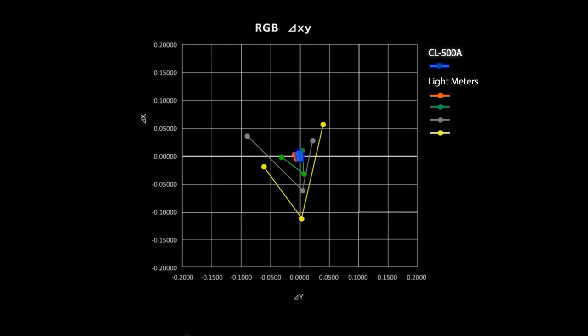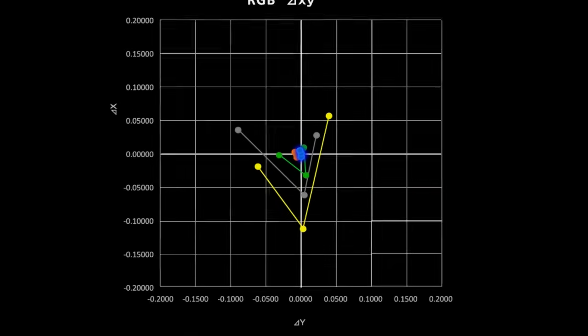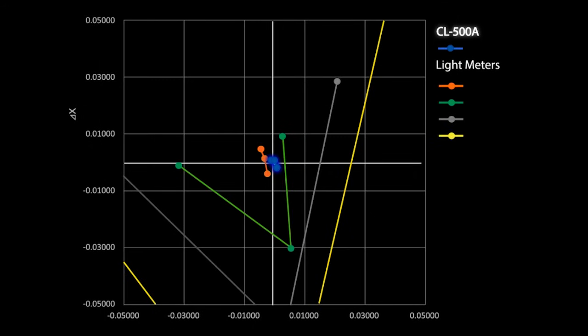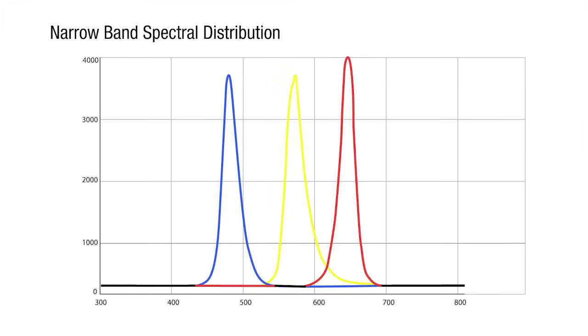Accurately measuring today's emitters such as LED, OLED, and gas discharge light sources is a challenge for typical light meters. The CL500A precisely measures the narrow band of today's LED products.